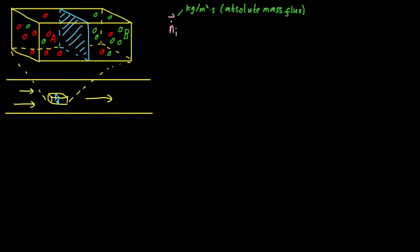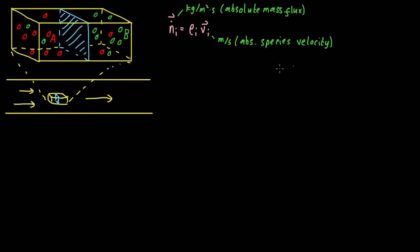And so this absolute mass flux of species i is quite easy to calculate, because it's simply the density of species i multiplied by the velocity of species i. What I mean by velocity of species i is that if we were to go over all of the atoms and determine the velocity of each atom, we could take the average velocity of each atom of species i. By doing that we get what we call the absolute species velocity, in meters per second. And this density is kilograms per cubic meter.